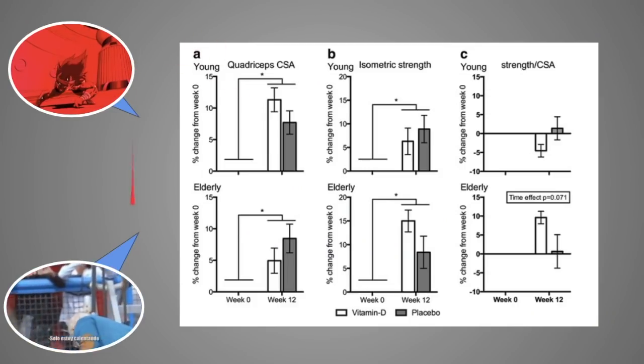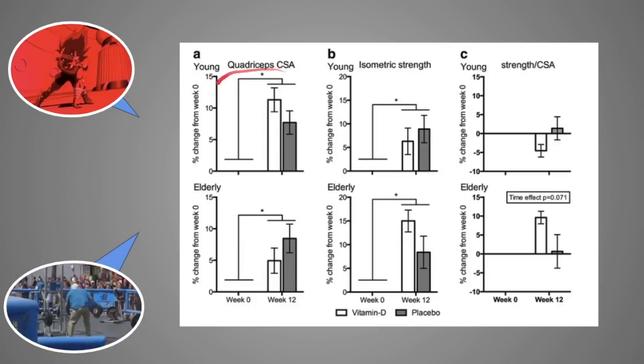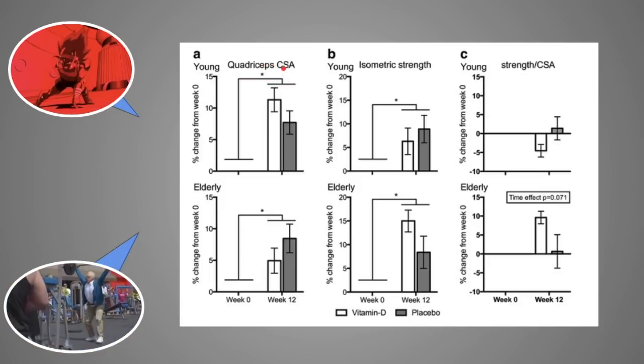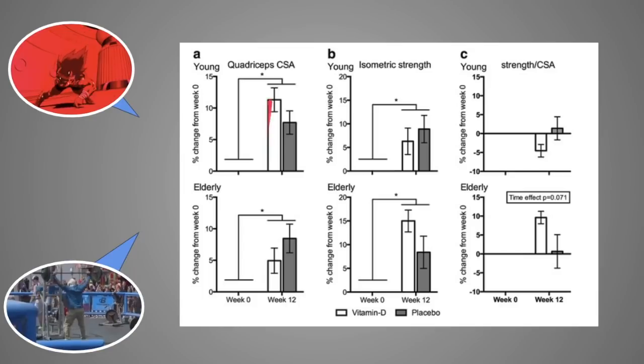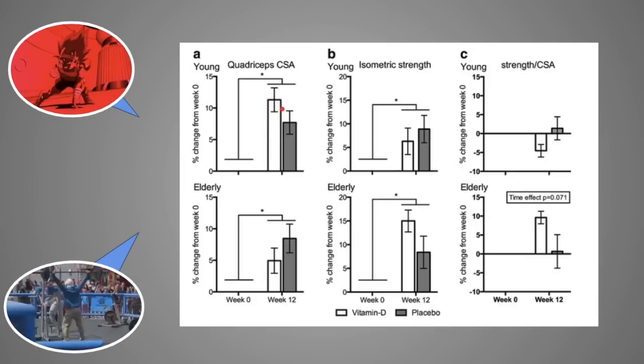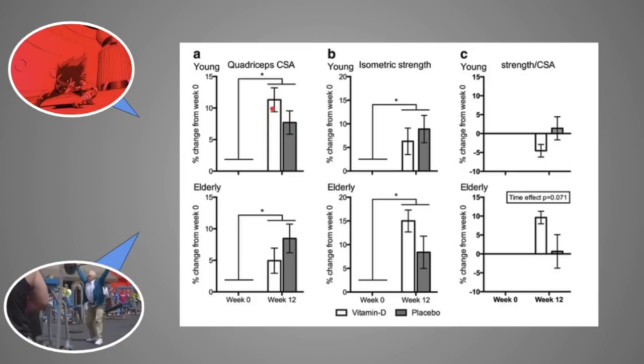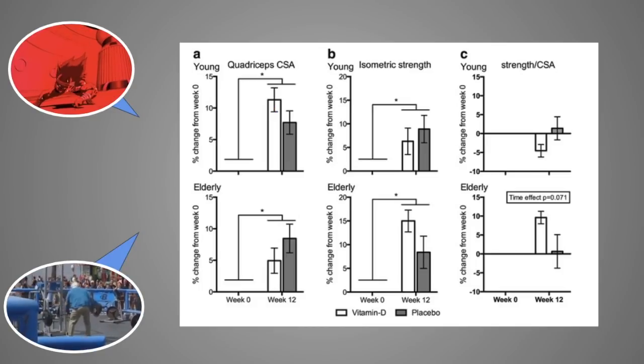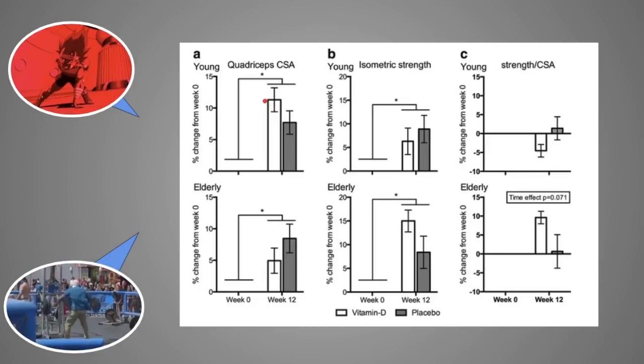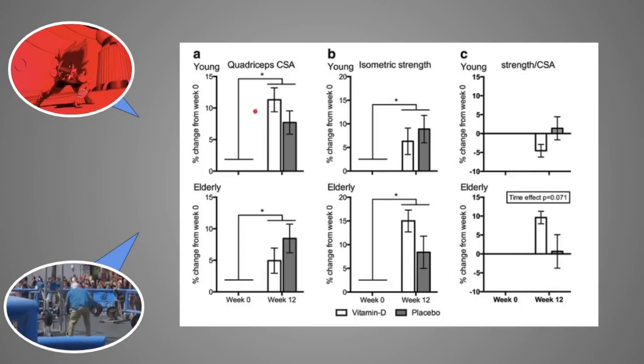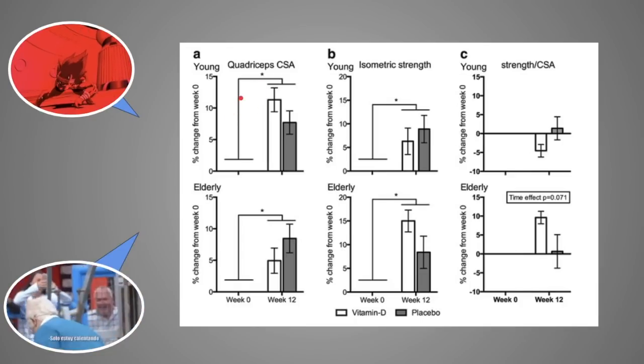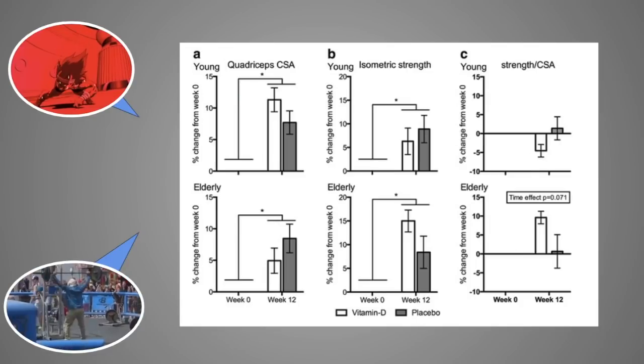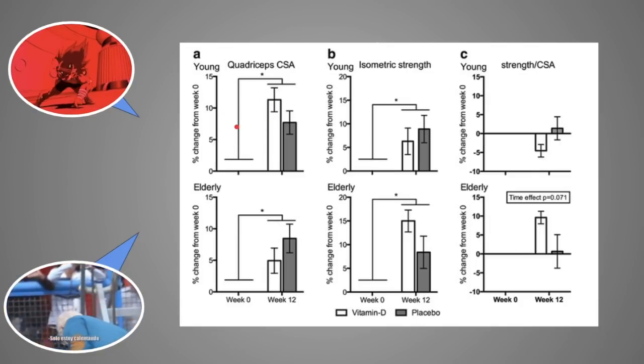Alright, so back to the study, young group, older group. So let's look at the top, quadriceps CSA, cross-sectional area, that's pretty much gains. The group that took vitamin D, which is the white bar, as you can see, more gains than the placebo group. Now, once again, it wasn't statistically significant, but it was significant enough to show an effect. And the reason why it wasn't statistically significant is because, once again, they only took about 1,900 IUs. That is a pussy dose.